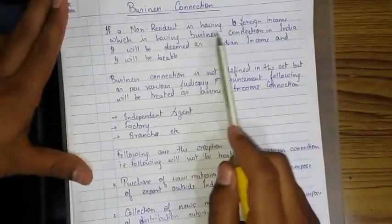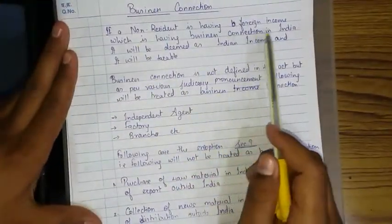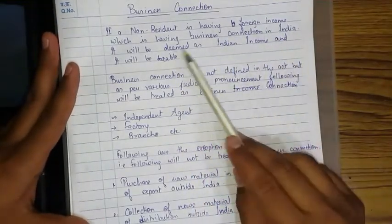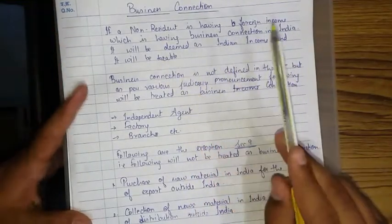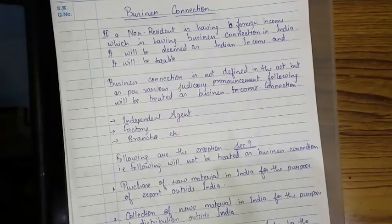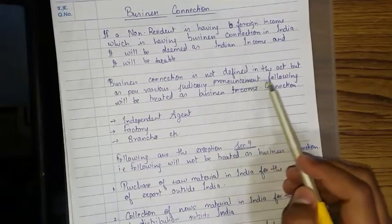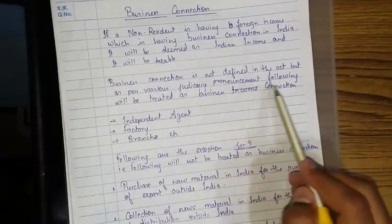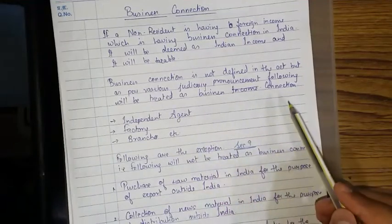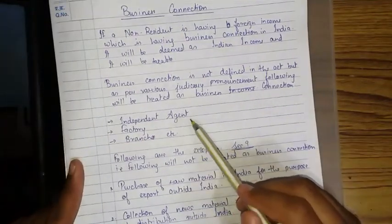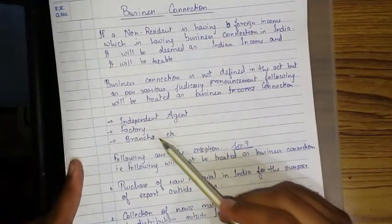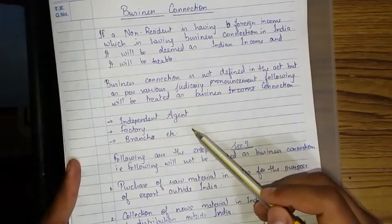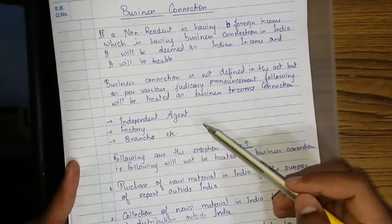Business connection: if a non-resident has foreign income which has a business connection in India, it will be deemed as Indian income and will be taxable. Business connection is not defined in the Act, but as per various judicial pronouncements, the following are treated as business connections: Indian independent agent, factory, branches, etc.